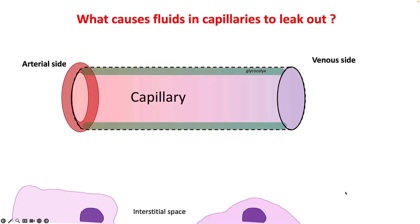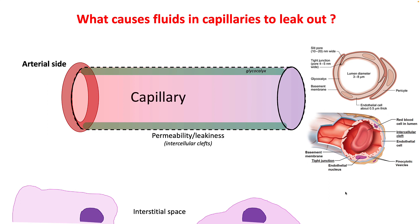So what causes fluids in the capillaries to leak out? This happens because these capillaries are inherently leaky and the fluid escapes from intercellular clefts. If you remember your capillary anatomy, the space between two cells is your intercellular cleft. Mostly they have tight junctions, but there are areas with large gaps called slit pores, which can be 10 to 20 nanometers wide, and this is the area where most of the fluid leaks out from.